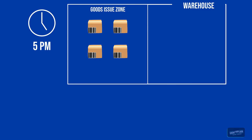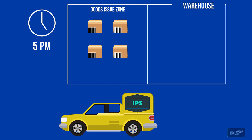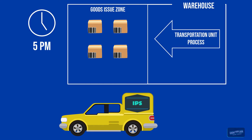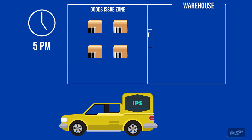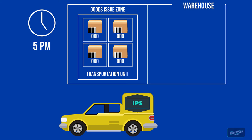When it's finally 5 pm, you can see what kind of physical truck arrives at your warehouse and you can now start the transportation unit process. You can now create the transportation unit and assign all the outbound delivery orders waiting in the goods issue zone to get shipped by the International Parcel Service.